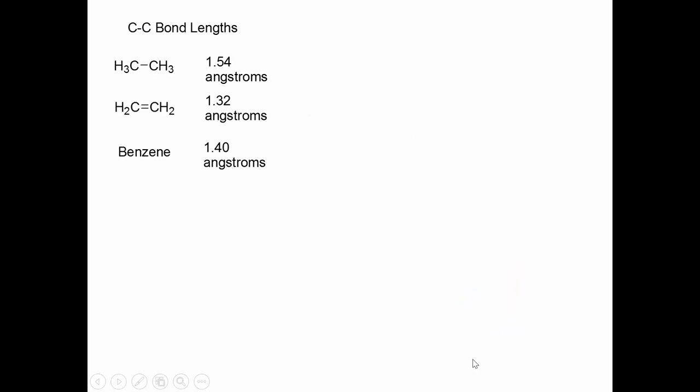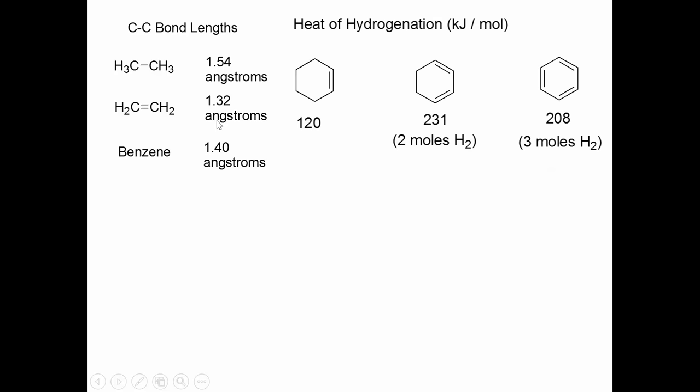Let's look at some of the consequences of this resonance. What we find here is that every CC bond is exactly the same length in benzene. It's 1.4 angstroms. Recall that a single bond is 1.54, a double bond is 1.32, so this is somewhere in between. Each CC bond in benzene is kind of a one-and-a-half bond if you want to look at it that way.